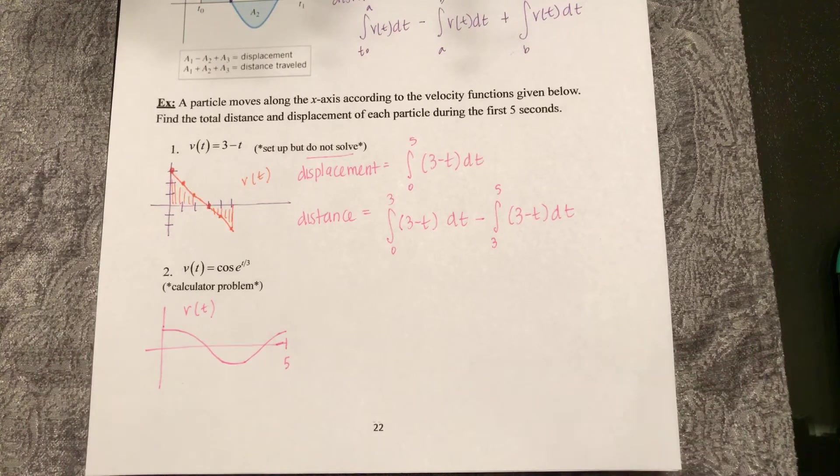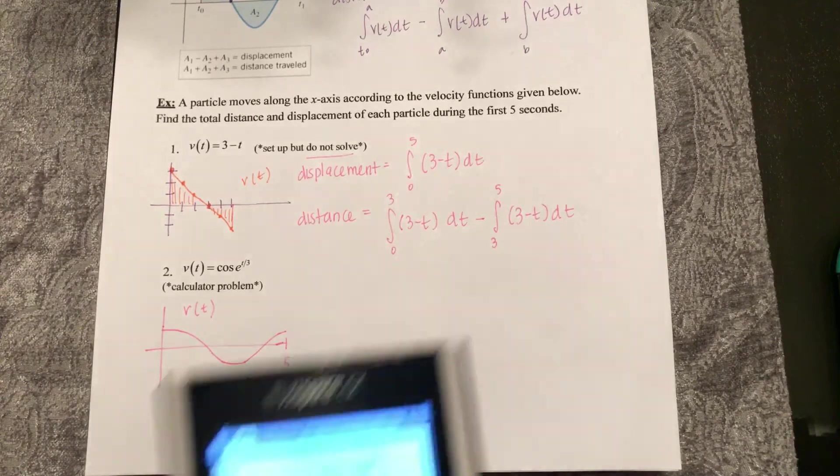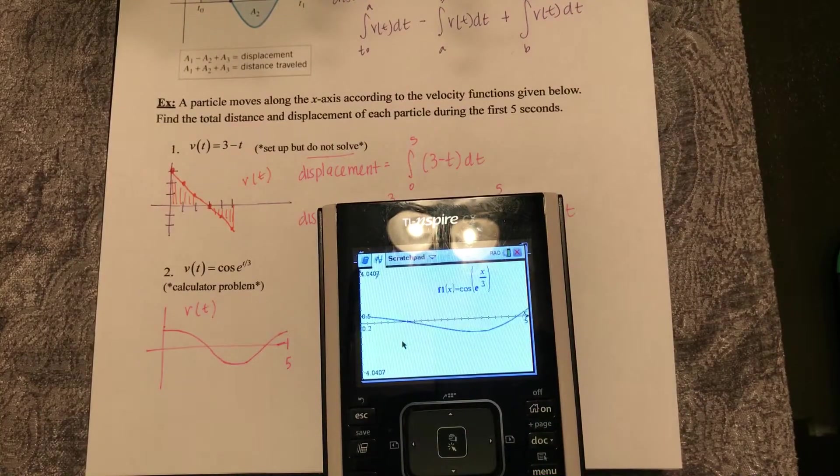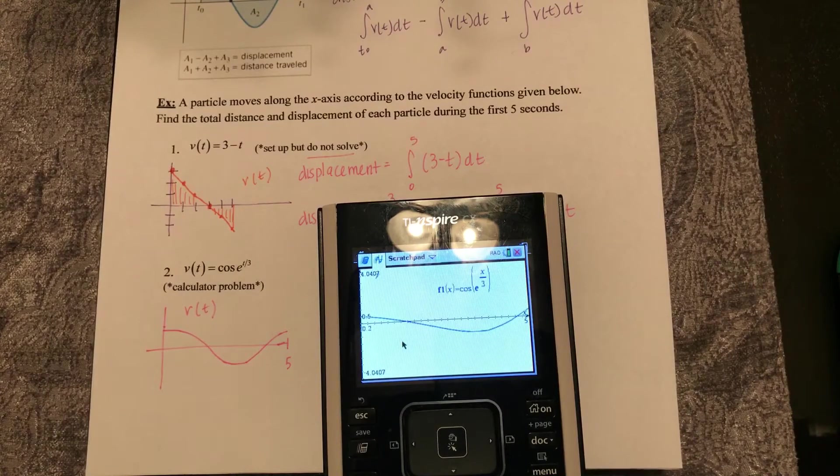Hey guys, in our last example we're given a calculator-active problem. What I did first was plug my function into my graphing calculator so I could see where my velocity is positive and where it's negative.